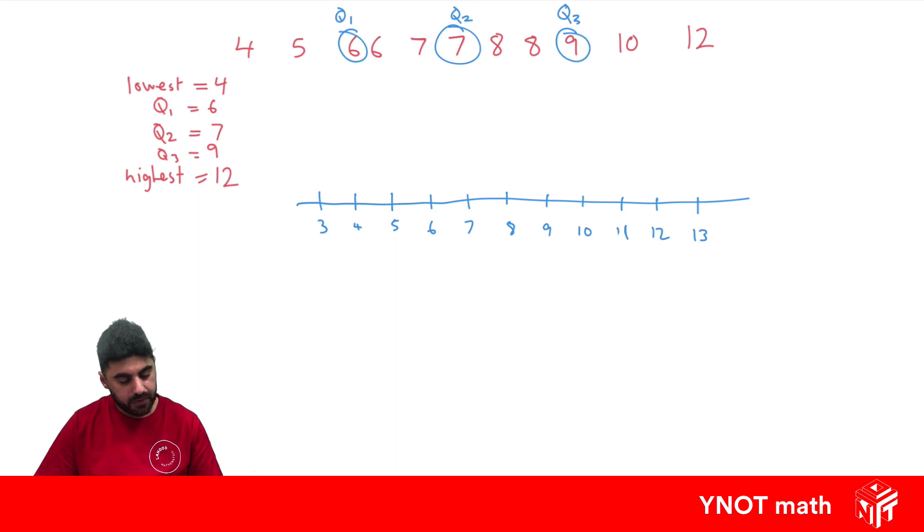And to draw the box plot, the box is going to be around our quartiles. So ranging from 6 to 9. So let's have a look how we can do that. So I'm going to draw a box from 6 to 9 and close that off. So here is our Q1. Here is our Q3. Then we draw a line where our Q2 is. So the line's through 7.